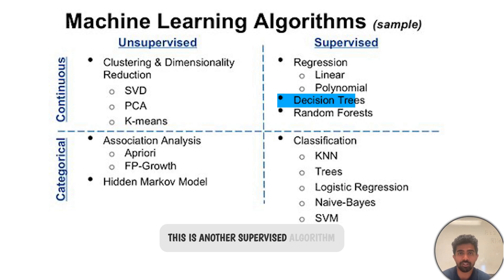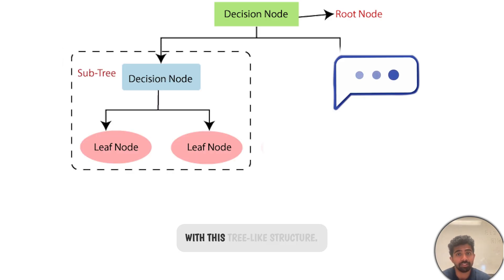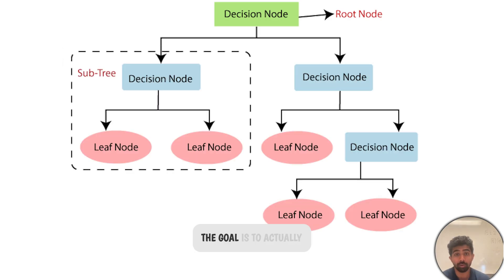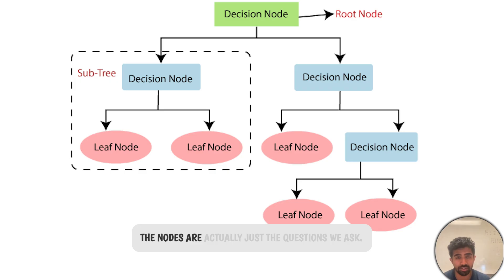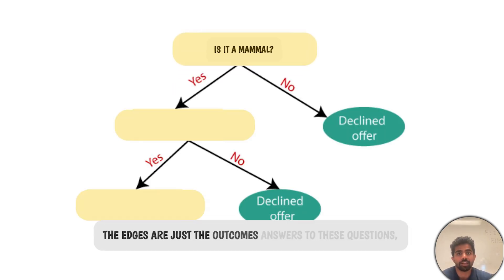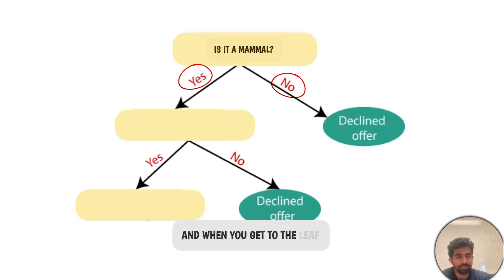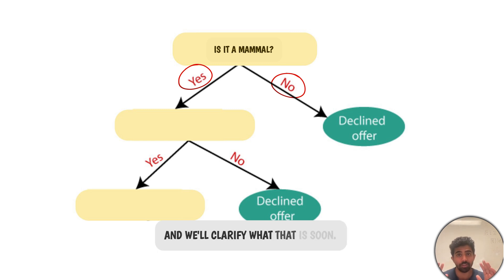Next up, decision trees. This is another supervised algorithm and you can use it for regression or classification. We simply ask questions to end up with this tree-like structure. The goal is to split our data into different groups based on these questions. The nodes are the questions we ask — like 'is it a mammal?' The edges are the outcomes or answers to those questions, like yes or no. And when you get to a leaf, that's the final model prediction for whatever question we were trying to answer.